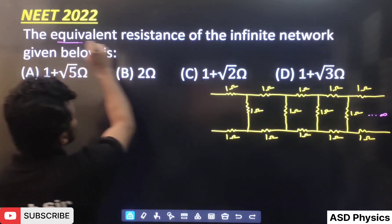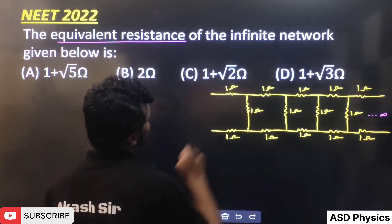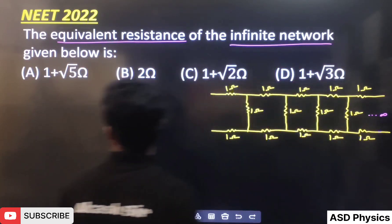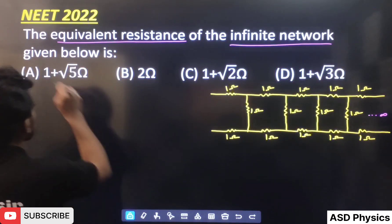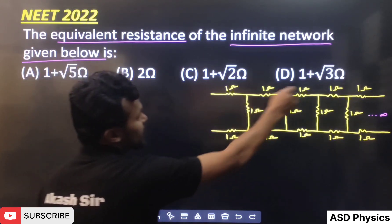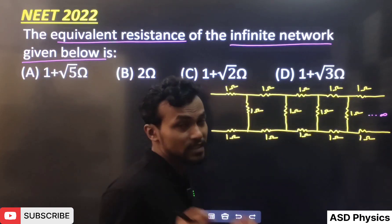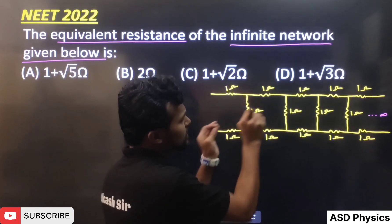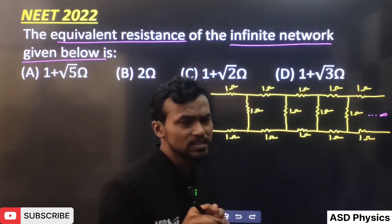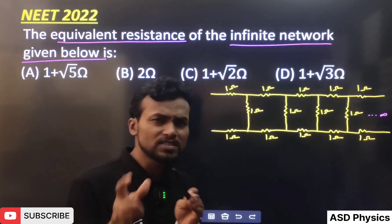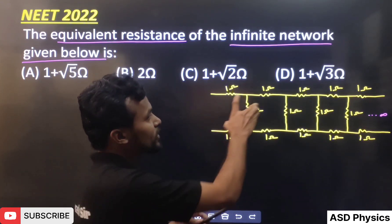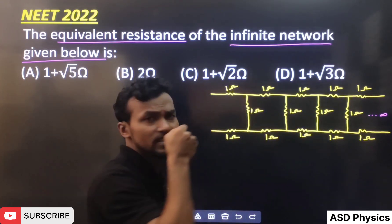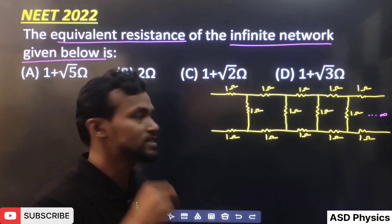The question is: the equivalent resistance of the infinite network given below is how much. This kind of circuit is given. And remember that whenever this kind of circuit is there, you will observe some kind of symmetry. Here, what kind of symmetry are you seeing? All the resistances are 1 ohm.